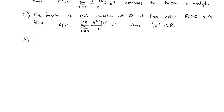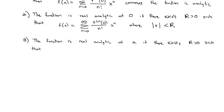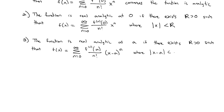Technically, we could generalize this and say the function is real analytic at some point a if there exists some radius greater than 0 such that f(x) equals the sum as n goes from 0 to infinity of the nth derivative of f at point a divided by n factorial times (x minus a) to the n, where the absolute value of (x minus a) is less than that radius. But for this course, we'll let a equal 0.